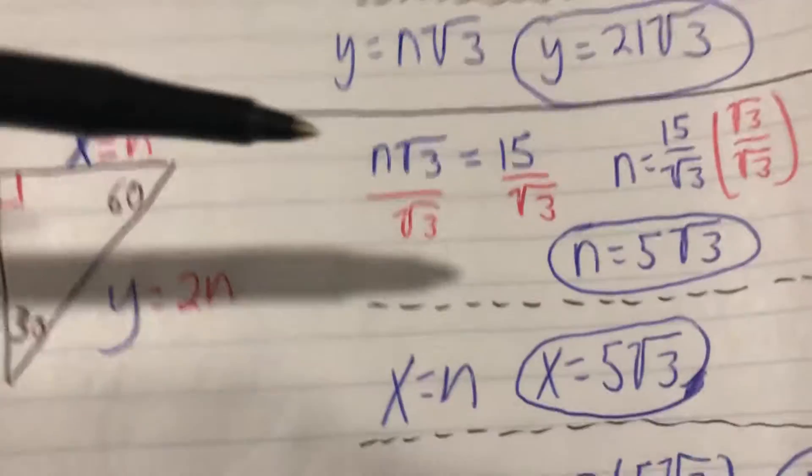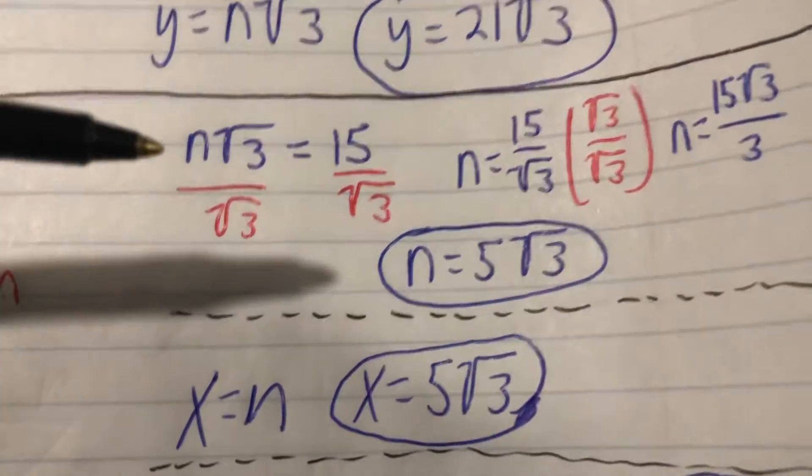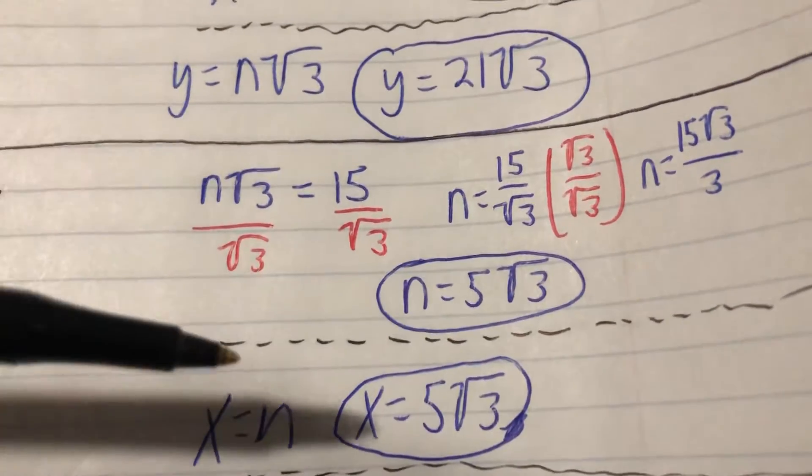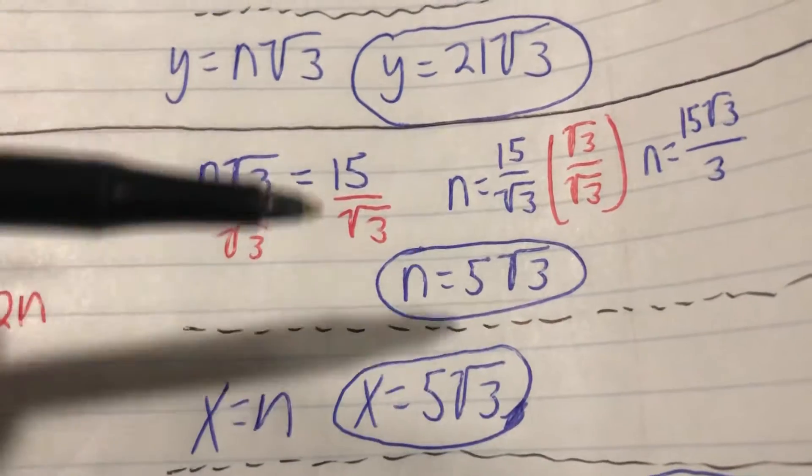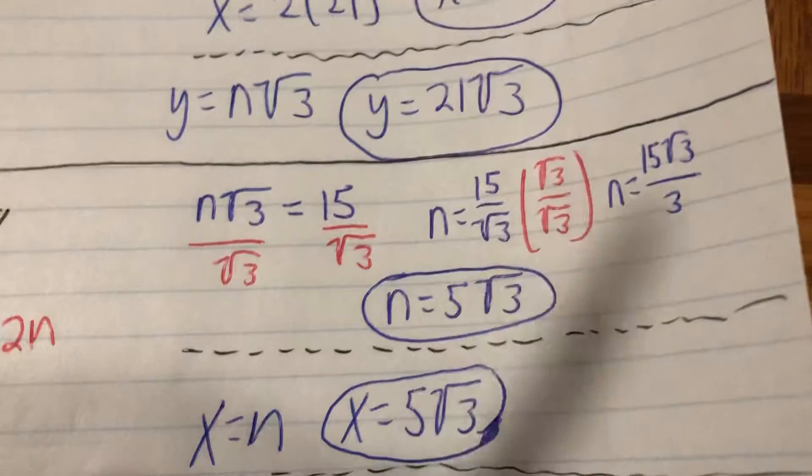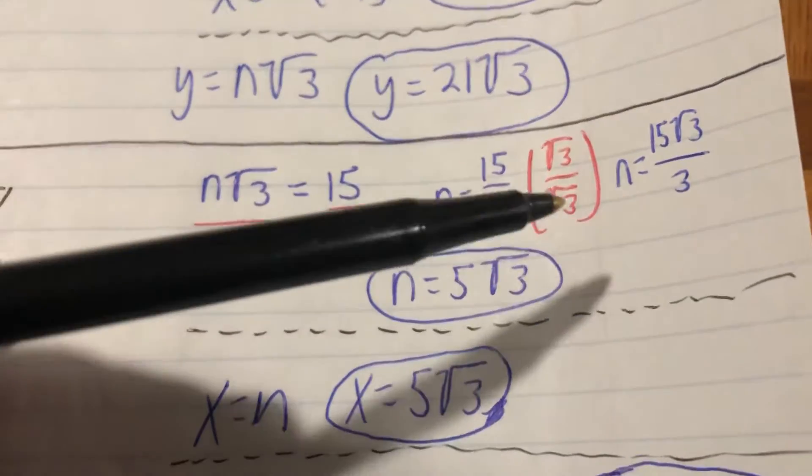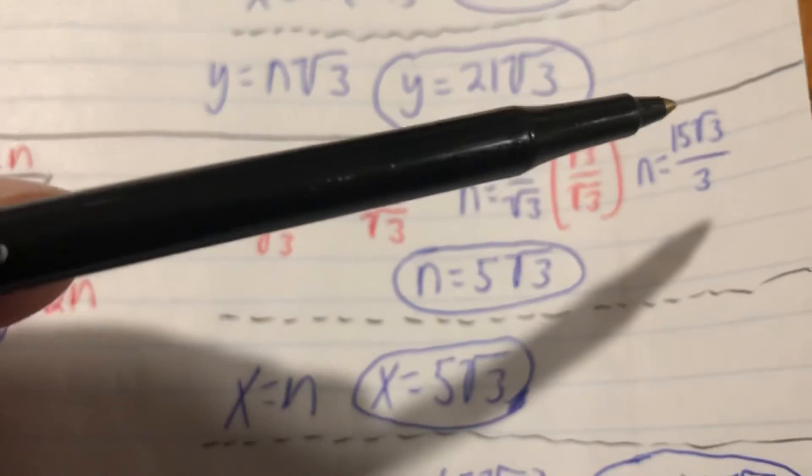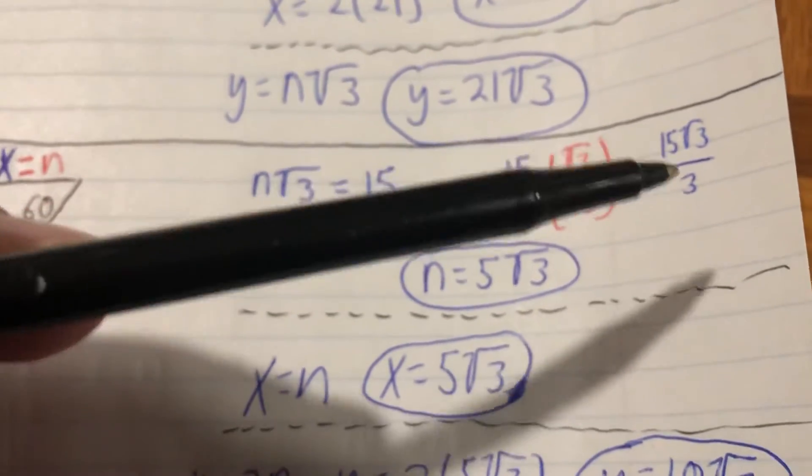So n√3 equals 15. We're going to divide by √3 on both sides—cancels on the left side. We have to rationalize this denominator on the right side, so we're going to multiply it by √3 over itself. When we multiply √3 times √3 it gives us 3, 15 times √3 they're glued together by multiplication. We're going to be able to simplify that fraction.